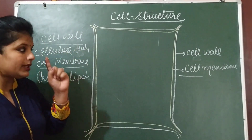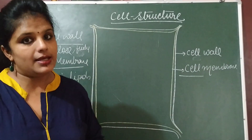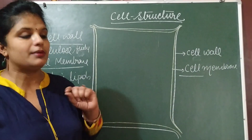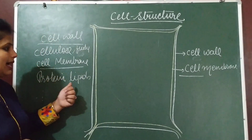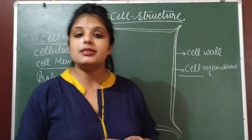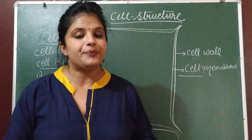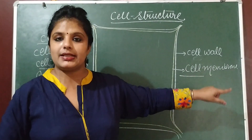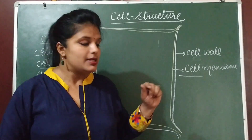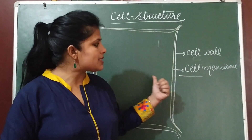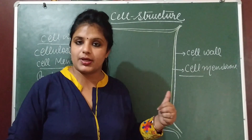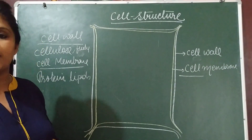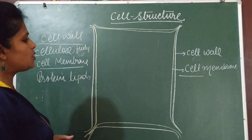Cell membrane is present in plant cell as well as in animal cell. Cell membrane is composed of protein and lipids, and it is selectively permeable, meaning it allows only selected materials to pass through. Only solvent molecules can pass through the cell membrane. The liquid part of a solution is called solvent.